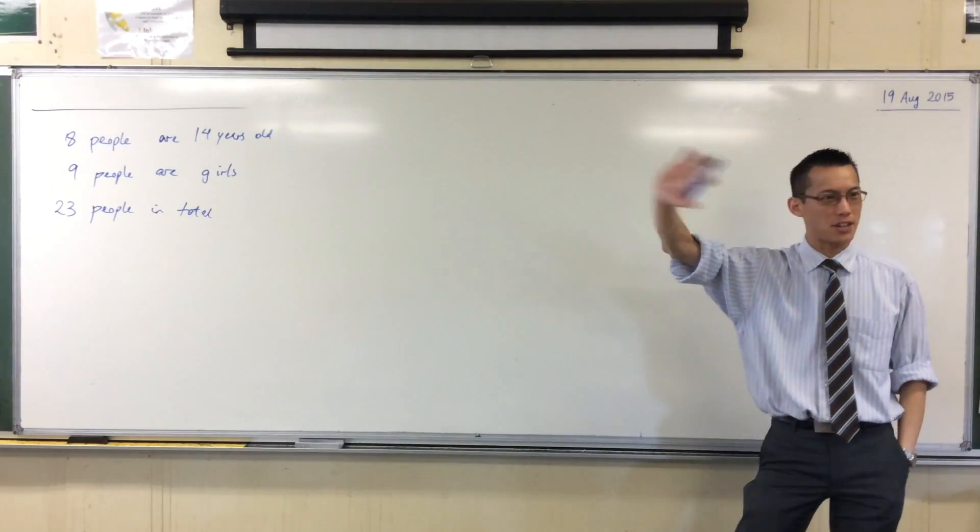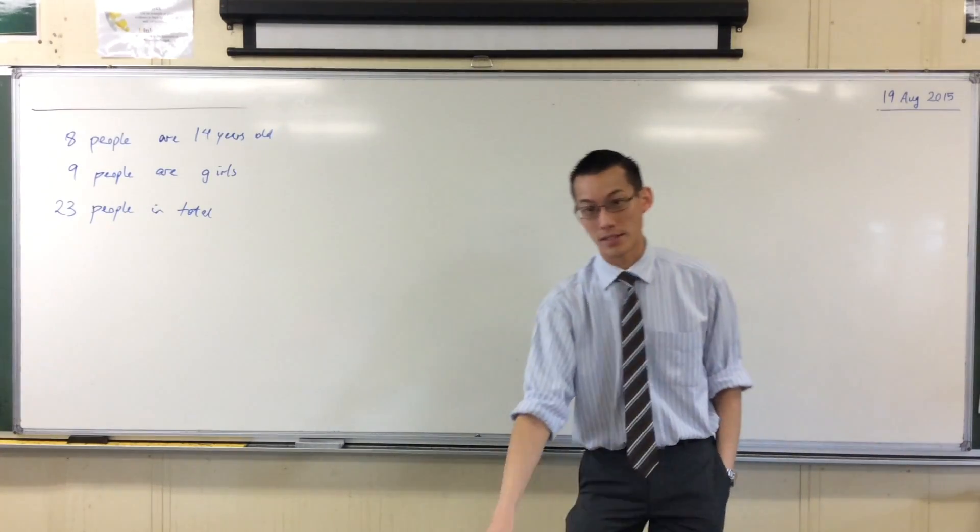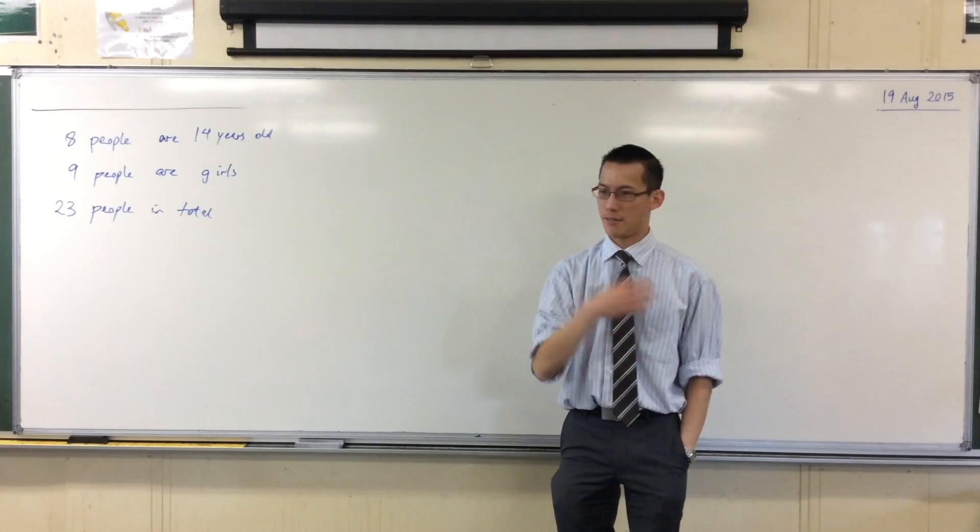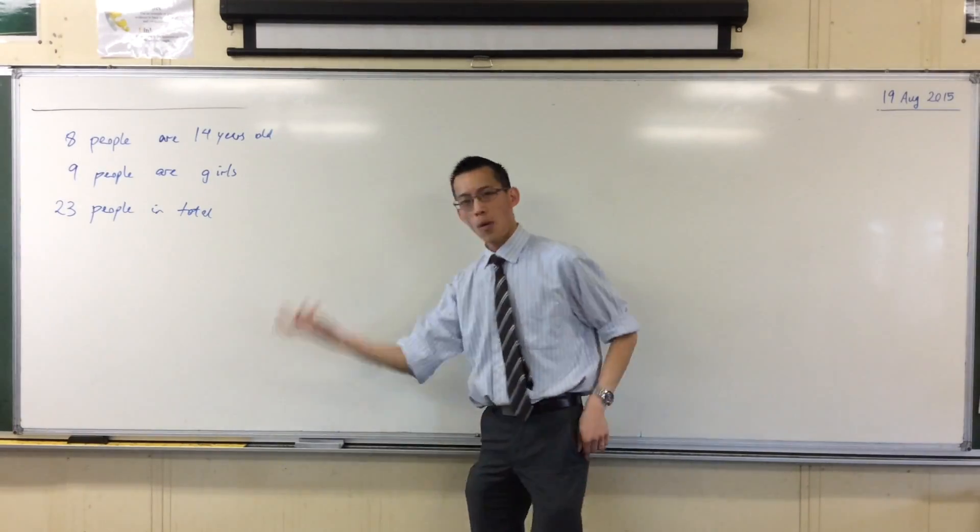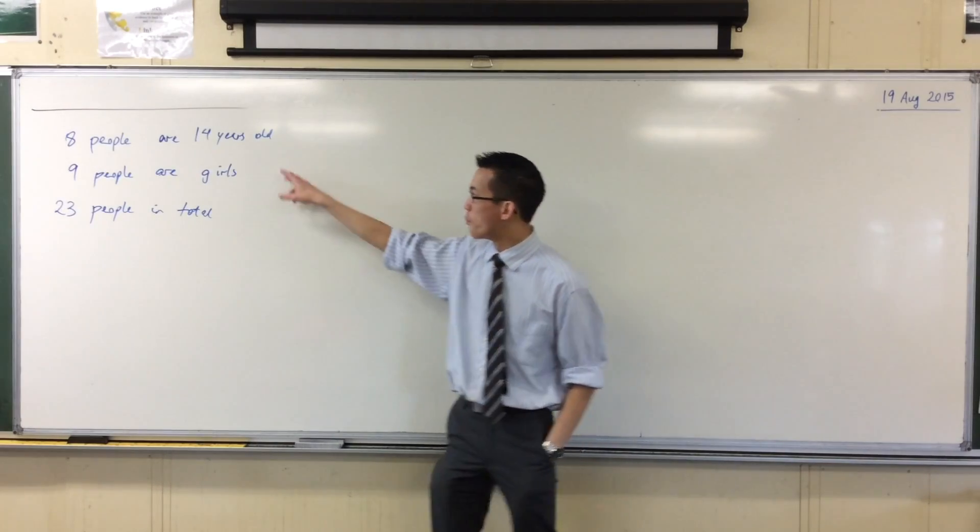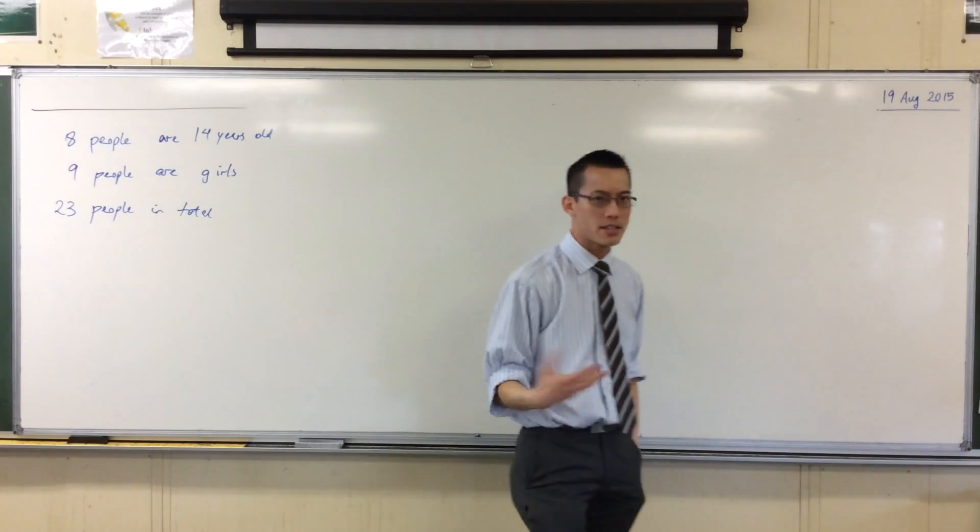What we're going to do is take this information, and if I said, for instance, what's the probability if I put everyone's names in a hat and draw a name out? What's the probability that I pick out a boy, or pick out someone who is 14 years old?